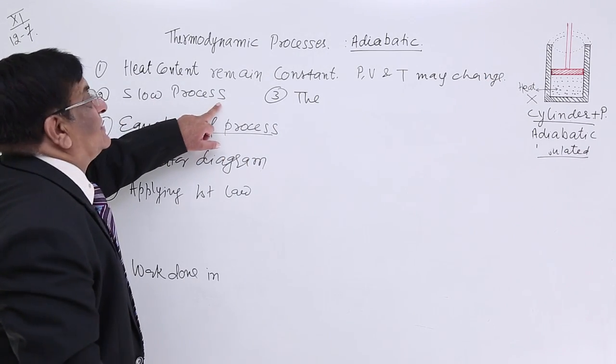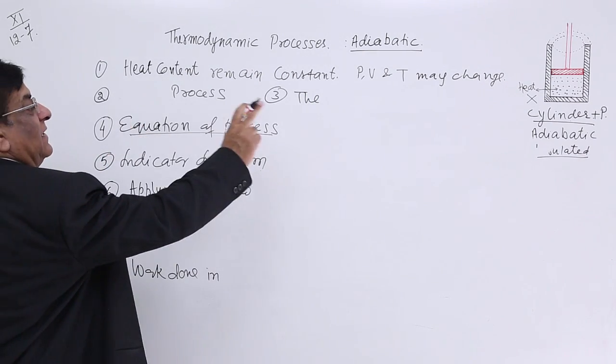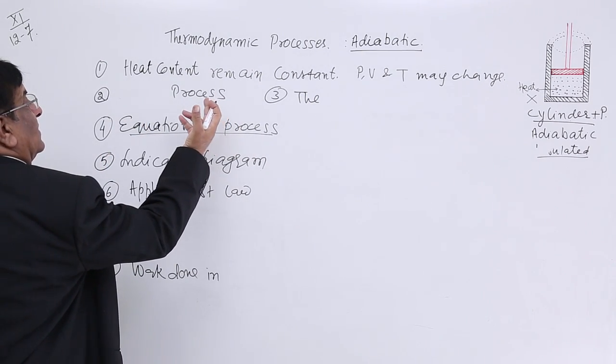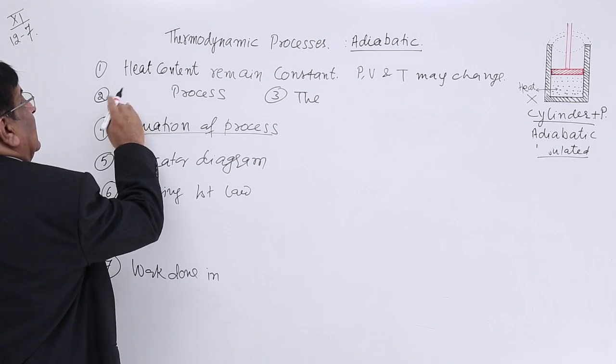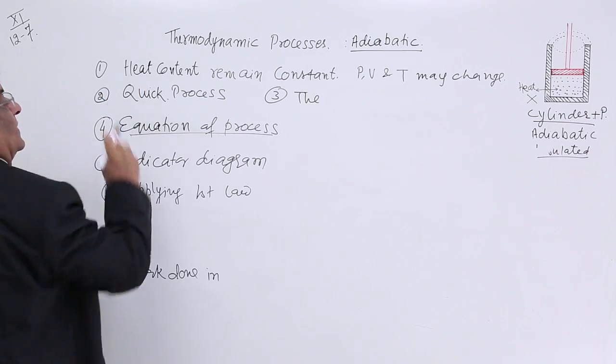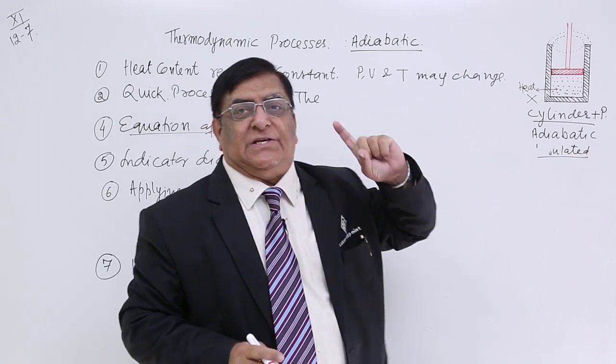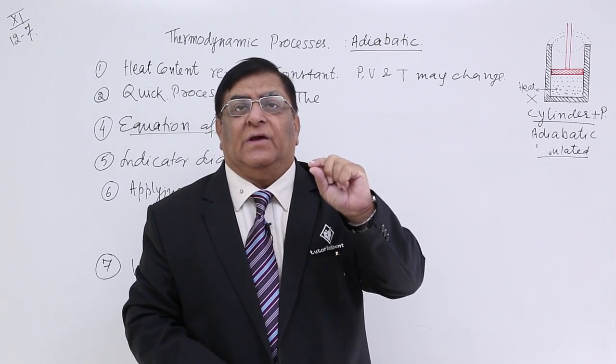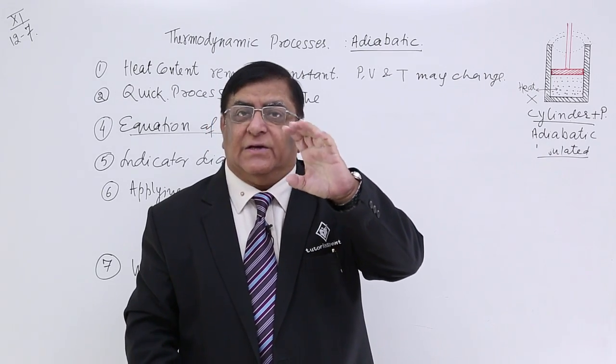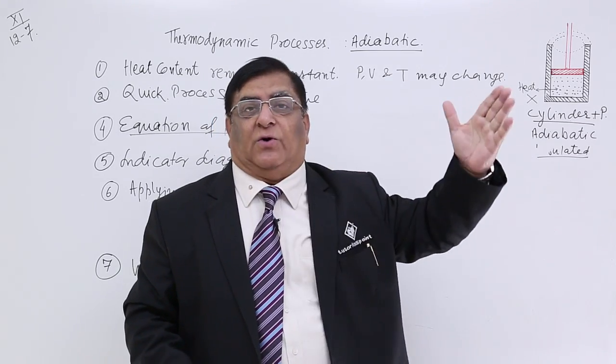Then this is a slow process. No. Invert to isothermal properties. This is a quick process. We do not, during these changes, P, V, during the changes of pressure and volume, we want to keep it very quick so that it does not get time for heat to go out.